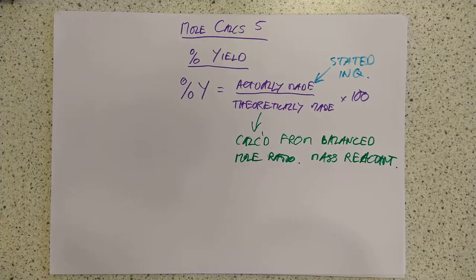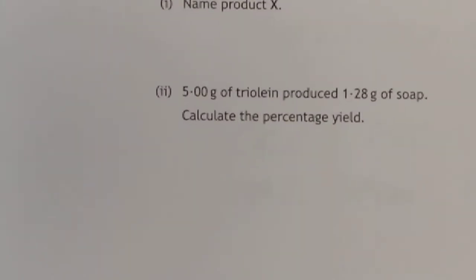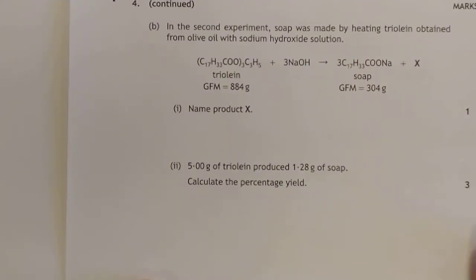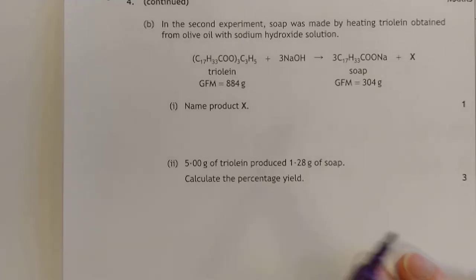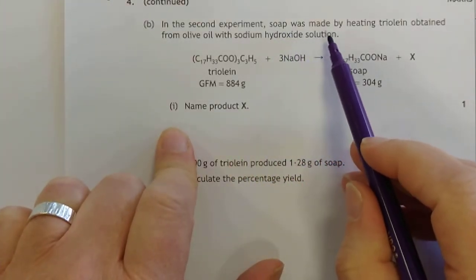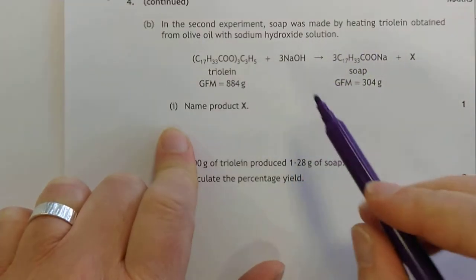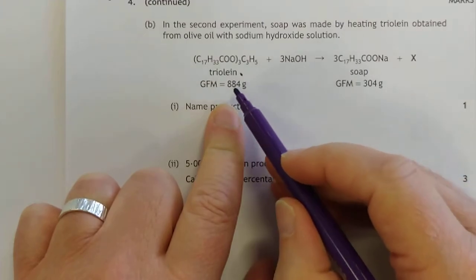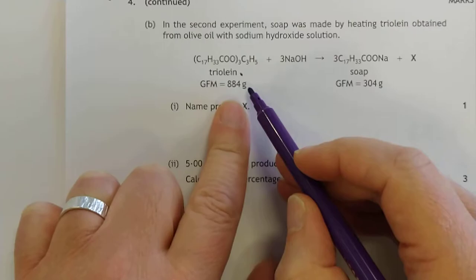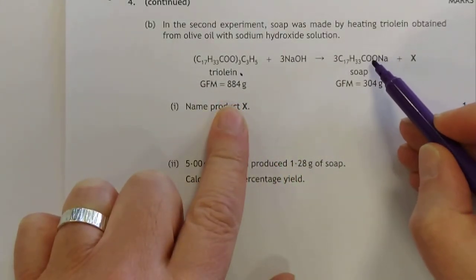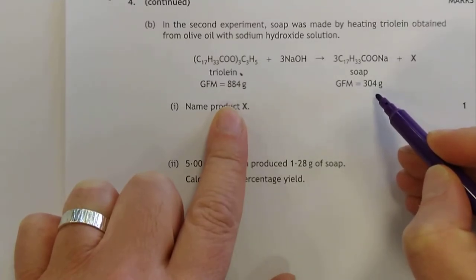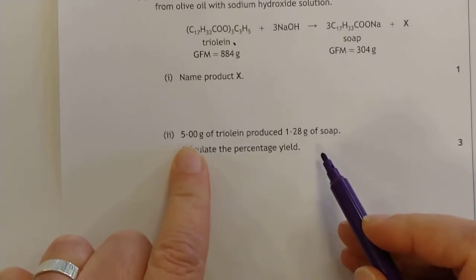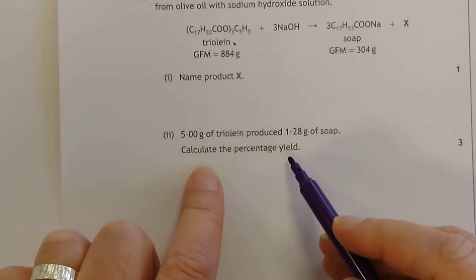Let me try and zoom in. Right guys, so this is an SQA question. In this experiment, soap was being made by heating triolein obtained from olive oil with sodium hydroxide solution. Don't let the weird names or horrendous formula put you off. They've given you the GFM, 884. And you're making the soap which is the sodium salt. 5 grams of triolein produced 1.28 grams of soap. Calculate the percentage yield.